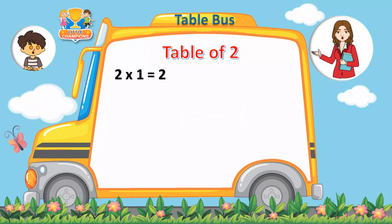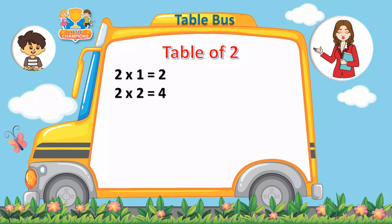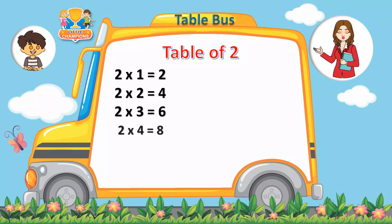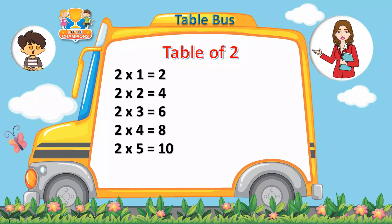Two ones are two. Two twos are four. Two threes are six. Two fours are eight. Two fives are ten.